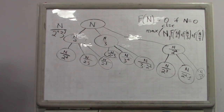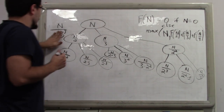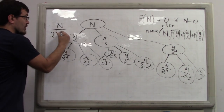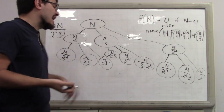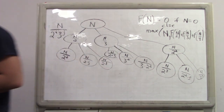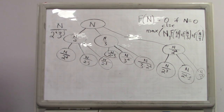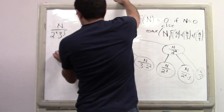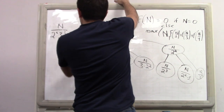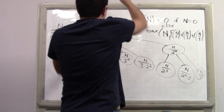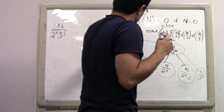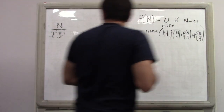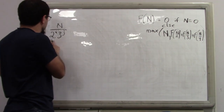Every case in this recursion tree has the form n / (2^i · 3^j) for some indices i and j. That means every case ever evaluated is always a division of n by powers of 2s and 3s. So what is the maximum value of i in this equation? At some point the value just becomes 0.